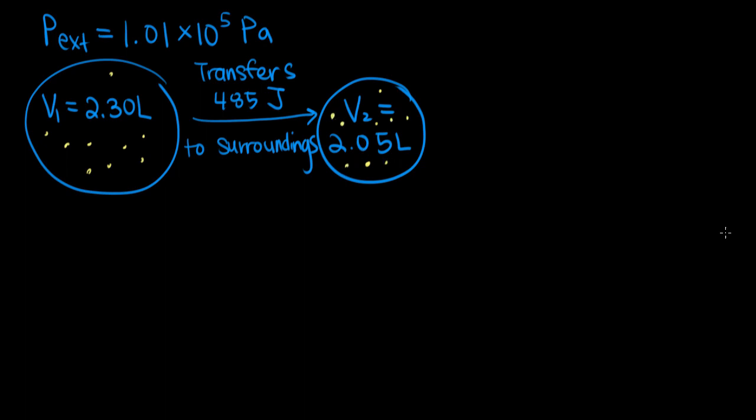The question we're going to answer is, for this process, what is delta U? So what's the change in internal energy for our system? We can use the first law of thermodynamics to answer this. The first law tells us that the change in internal energy, delta U, is equal to the work done plus the heat transfer.